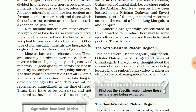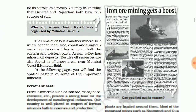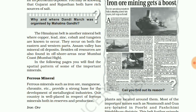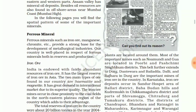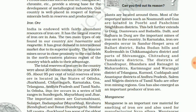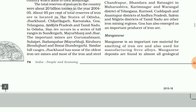Coming to metallic minerals — ferrous minerals first, as they provide a strong base for metallurgical industries. Iron ore: hematite and magnetite are the main types of iron ores in India. Total reserves in 2004-05 were 20 billion tons. Their distribution and uses will be discussed in a separate video. Manganese is a raw material for iron smelting and is used to make alloys.